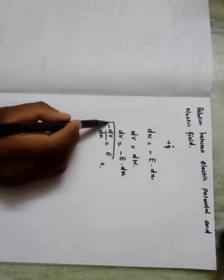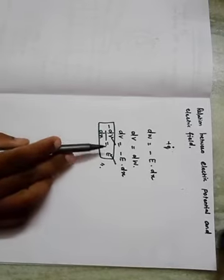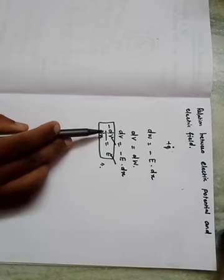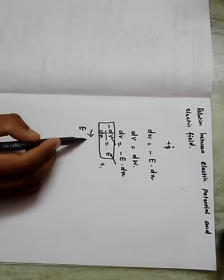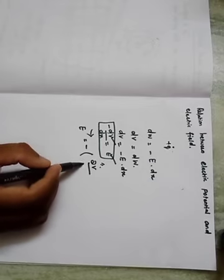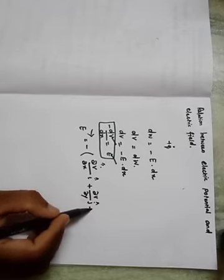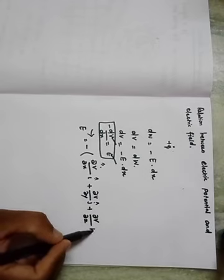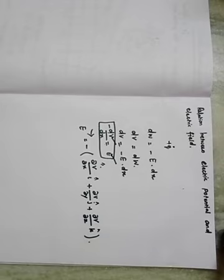The electric field is the negative gradient of the electric potential — it is the negative potential gradient. In vector form, the electric field is: E⃗ = −(∂V/∂x î + ∂V/∂y ĵ + ∂V/∂z k̂). This is the general equation for the electric field.